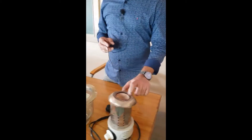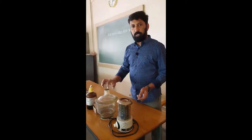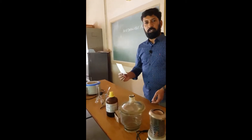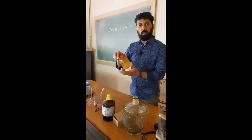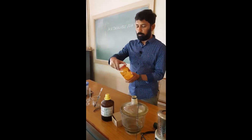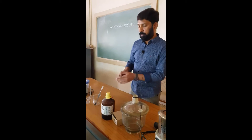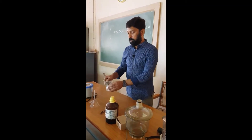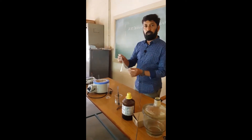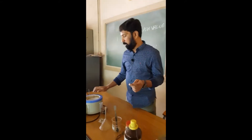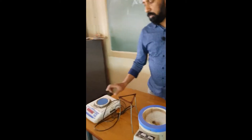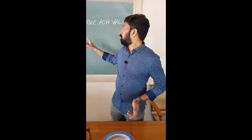The requirements for the acid insoluble ash value: first we need an incinerator, desiccator, ashless filter paper, dilute hydrochloric acid. The drug used is liquorice — it is a powder drug. Also needed: tongs, beaker, spatula, funnel, measuring cylinder, mantle, tripod stand, and electronic balance. These are the requirements for doing the acid insoluble ash value.